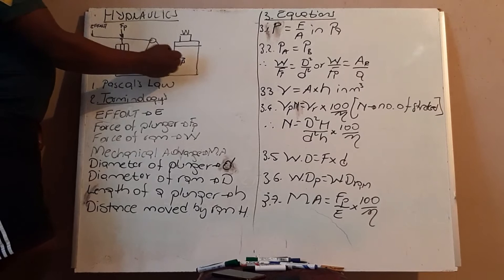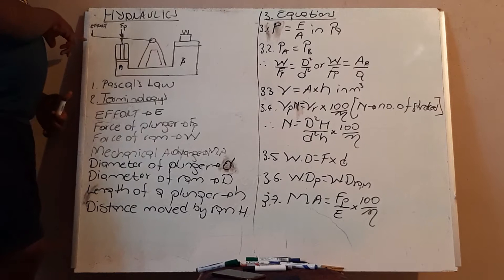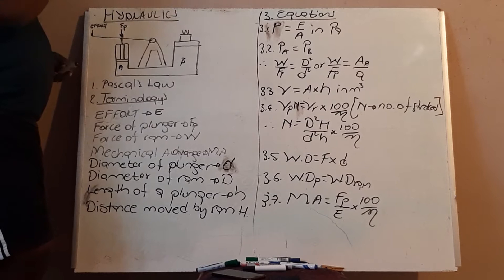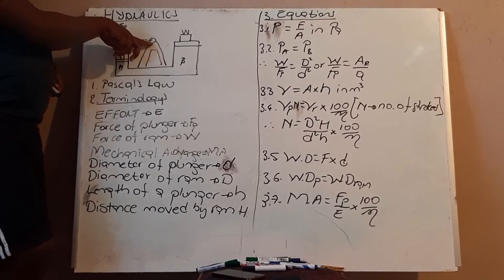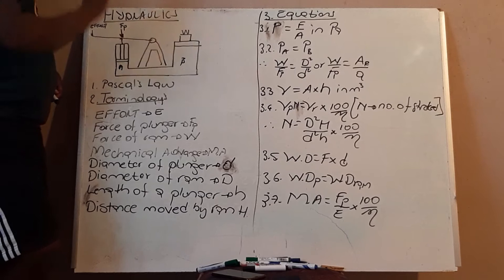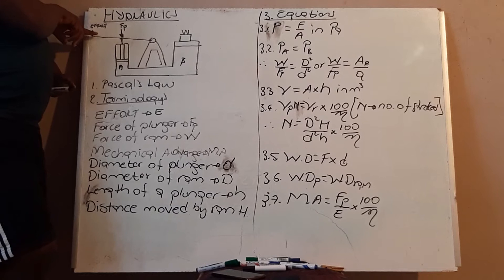This side A we call it a plunger, and the other side we call it a ram. You can see here this is a pivot where this lever will move up and down. So as you apply an effort here, it will move around this pivot. As you apply an effort, your force of the plunger is being exerted and then it pushes the plunger down.